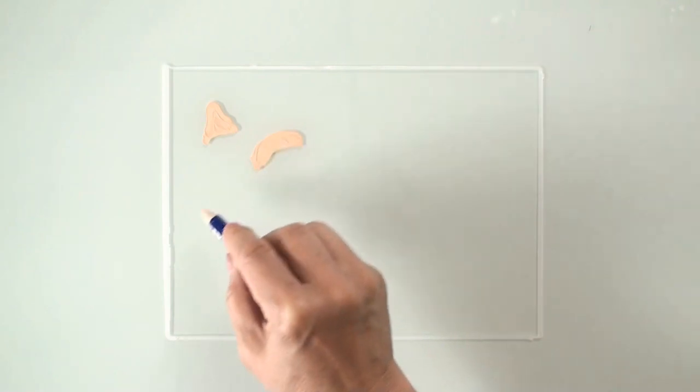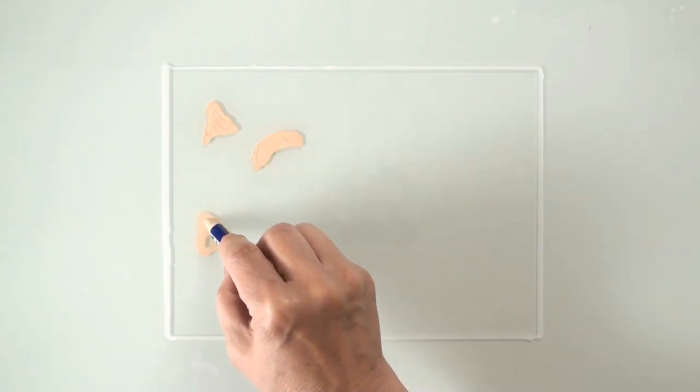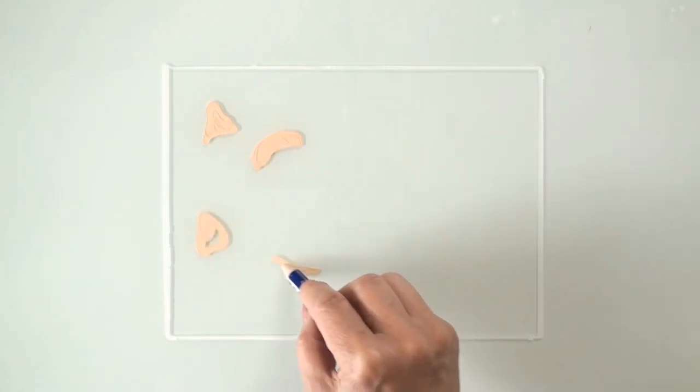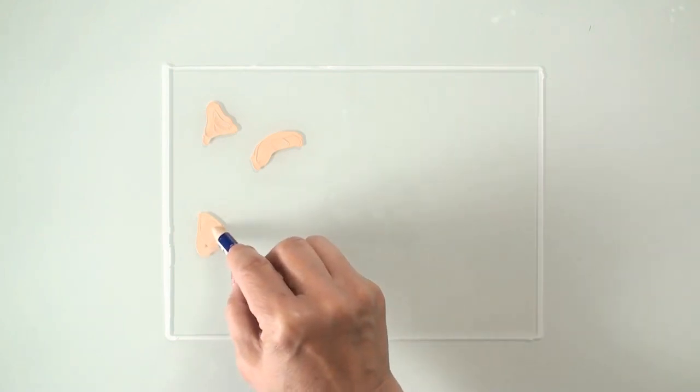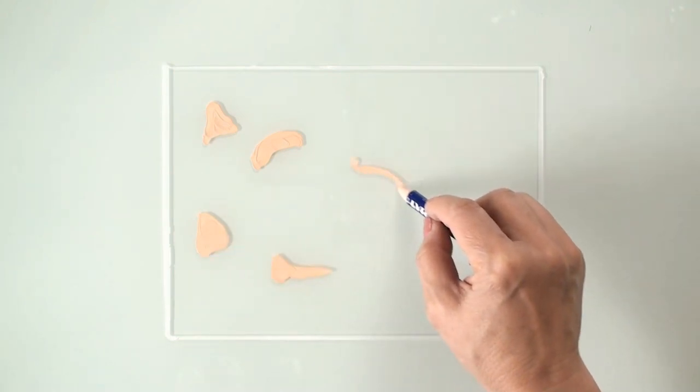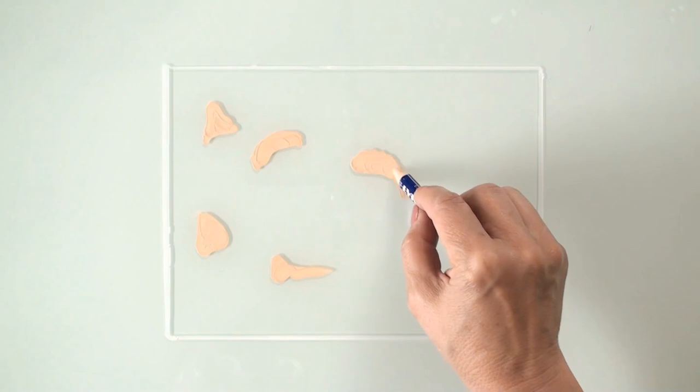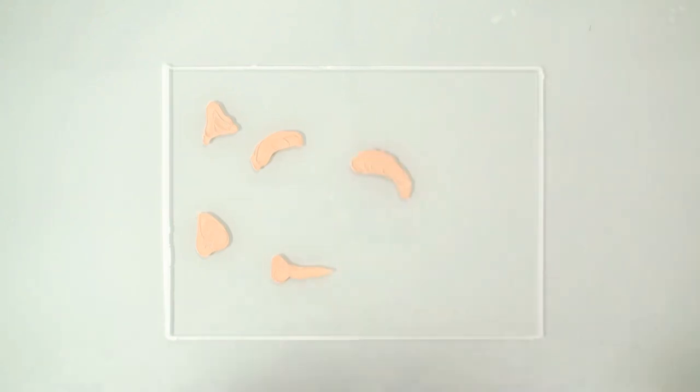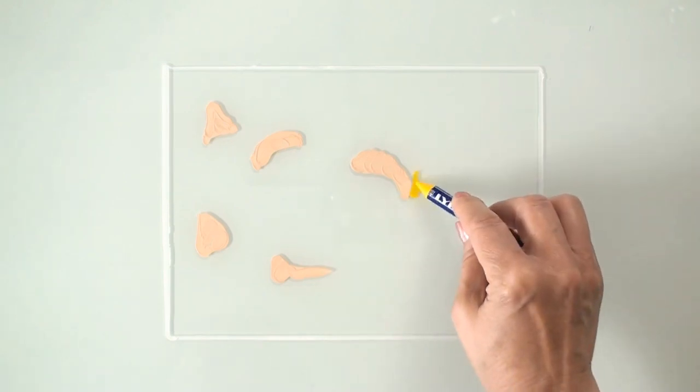The temperature dial is set at maximum. I'm using Lyra aquacolor crayons which melt readily to a creamy consistency. I have outlined the warm zone with a white crayon to demarcate the area I'll be working on.